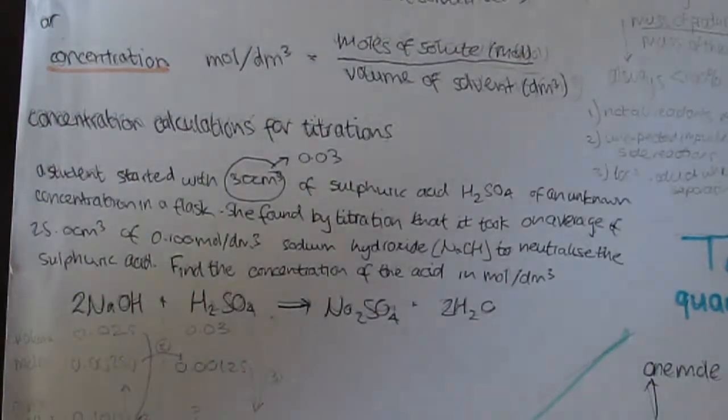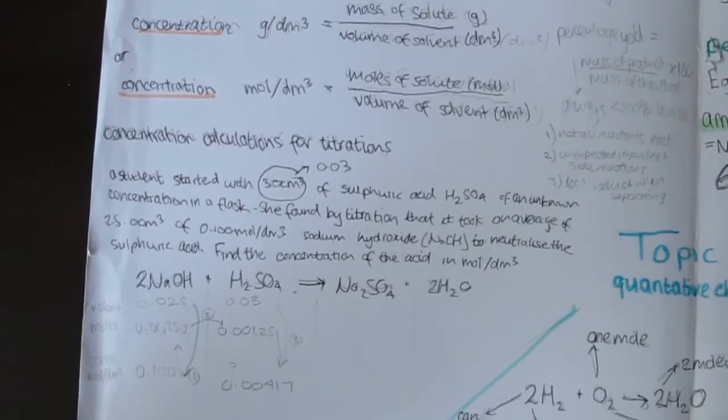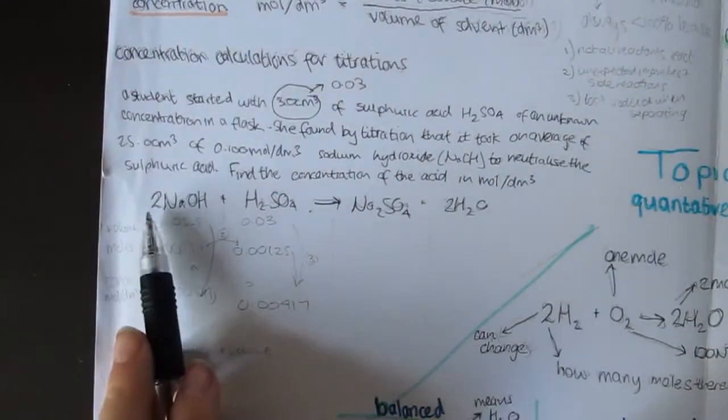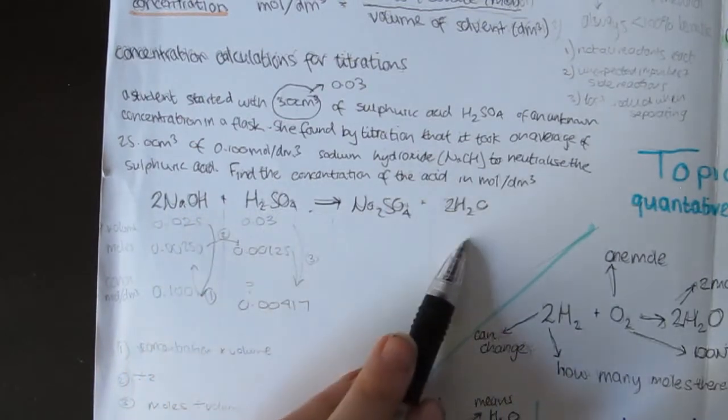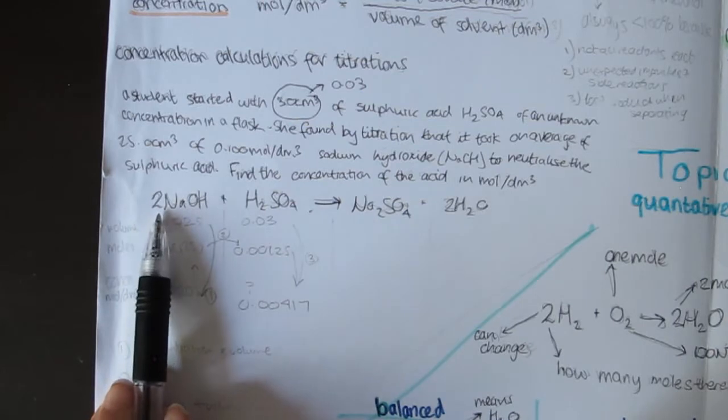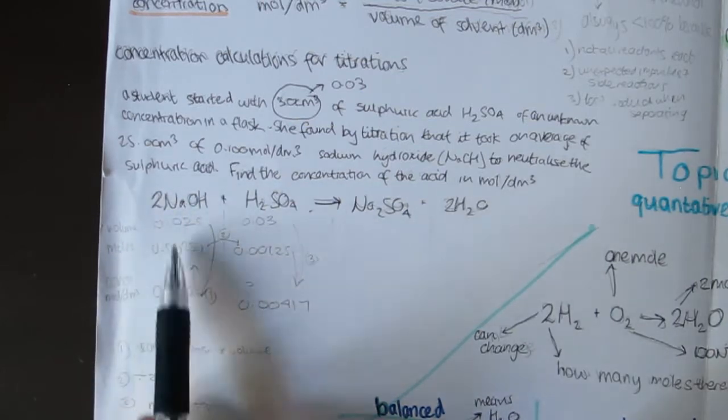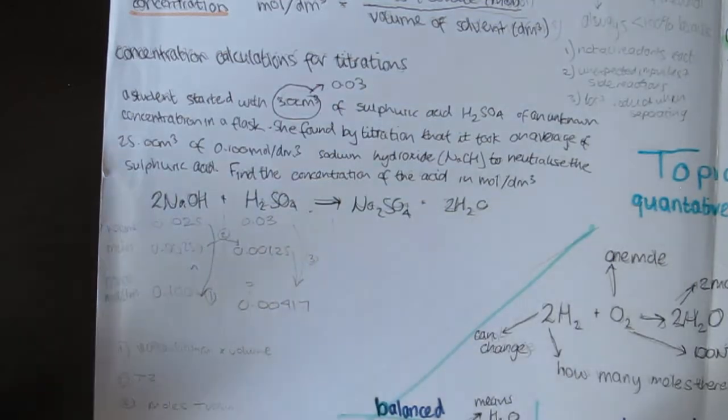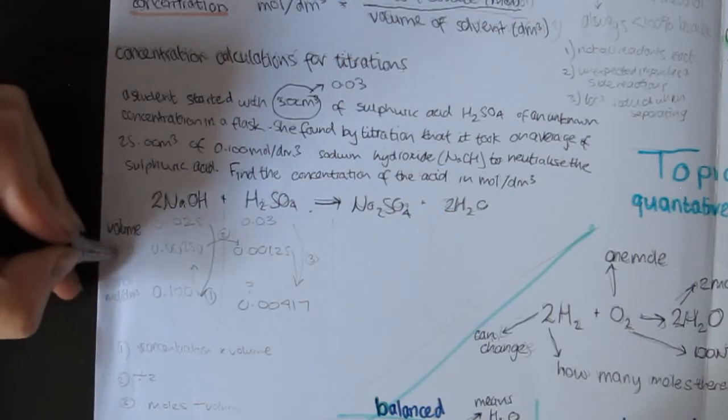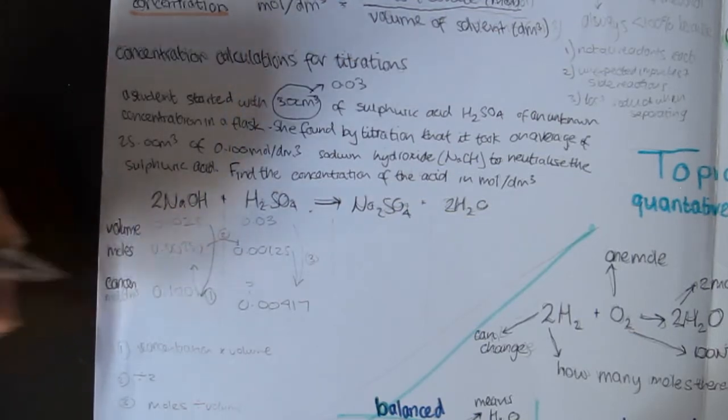Now, I always like to do a table for this. So across the top, I put my balanced equation. It's very important that it's balanced, so for the moles bit, that we know we can have the right amount of moles. So, down the side then, write volume, moles, and concentration.